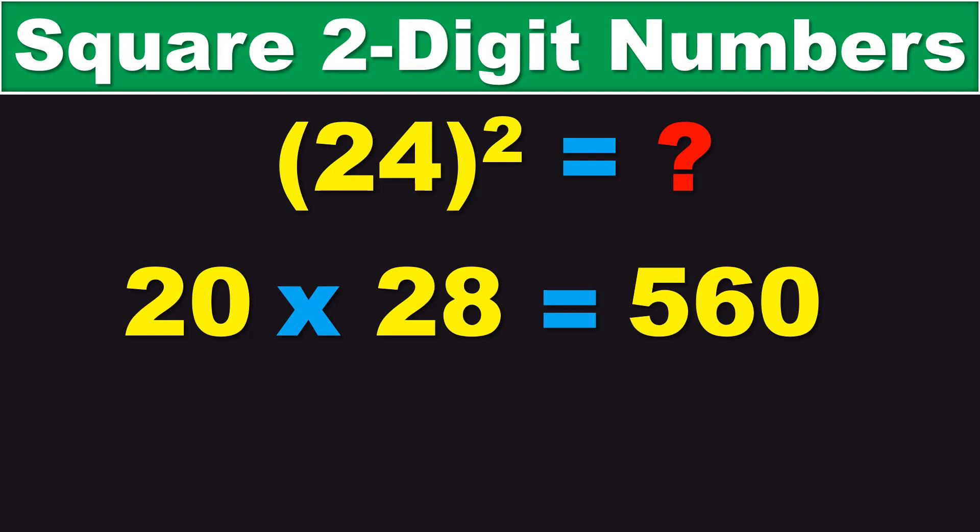So, the last digit of 24 is 4. And, if you square that, then you get 16.